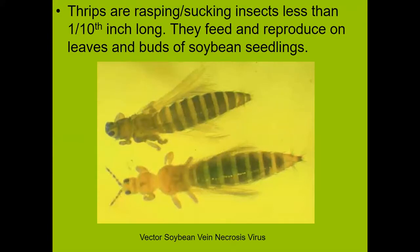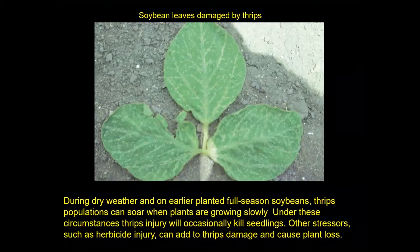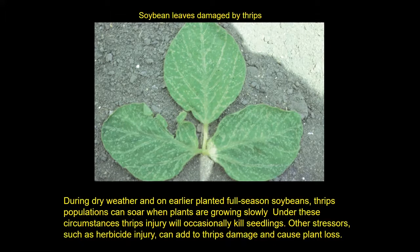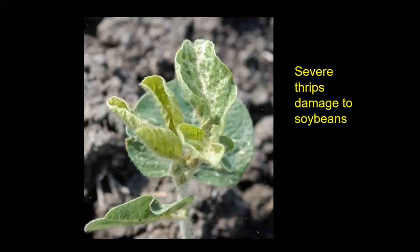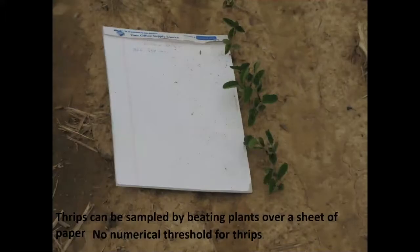Thrips can also be a pest of soybeans. They are always present on soybeans but don't do the same level of damage on soybeans that they do on cotton. You can find this type of stippling effect sometimes. They'll vector a soybean vein necrosis virus in North Alabama, and we have seen yield reductions in caged studies where we excluded thrips from feeding on the soybeans. They can crinkle up the leaves and require treatment in some situations. You can sample thrips by checking plants over a white surface like a notepad or a handkerchief.